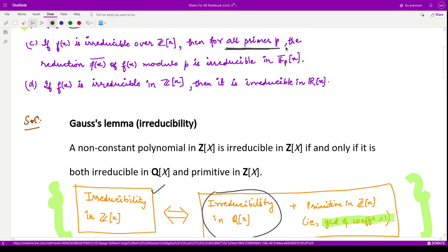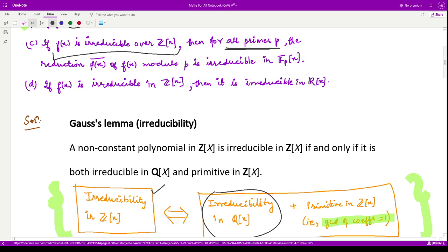Now do not confuse it with integer modulo irreducibility test. That test is something different. They are saying the polynomial is irreducible over Z[x], but then it should be irreducible in F_p for all prime p. So in order to see whether this result is true or not, you just find an example where this thing is true but this doesn't.